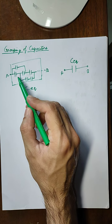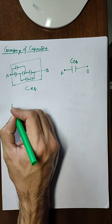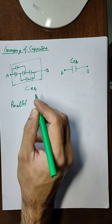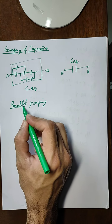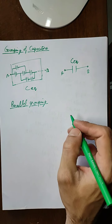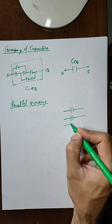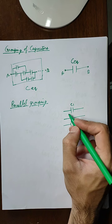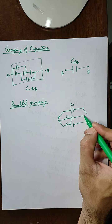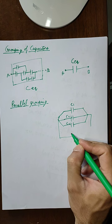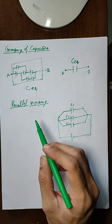So that we can replace all the capacitors by one equivalent capacitance. Now there are majorly two types of grouping. First we will study about parallel grouping — that is when capacitors are connected in parallel with each other. Let us say we have three uncharged capacitors with capacitances C1, C2, and C3, and they are connected in this way with a battery.